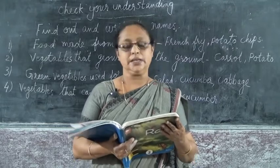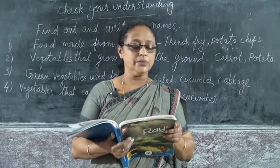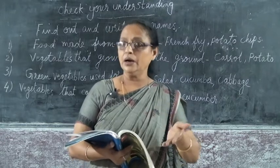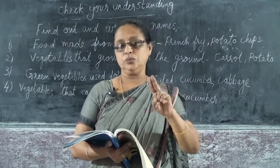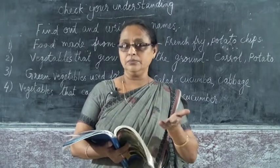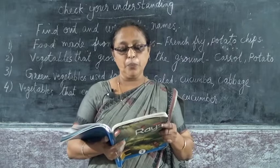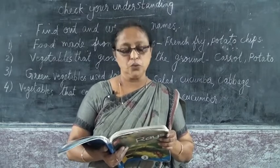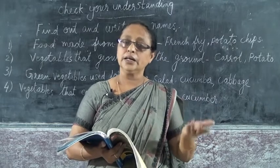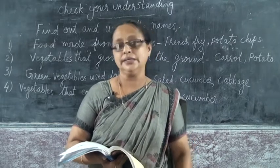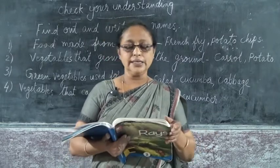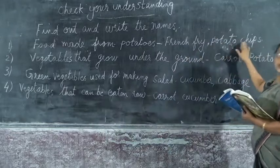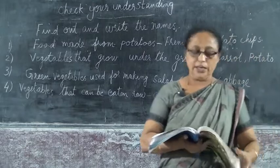First, find out and write the names. First one: a food made from potatoes. Here it is given — you can write two answers. Food made from potatoes — what all things are made from potatoes? You can write your choice. I am writing my choice on the board. Food made from potatoes: that is french fry and potato chips. If you have any other choice you can write that.